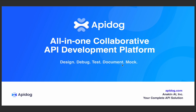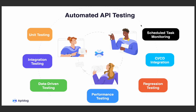Hello everyone and welcome to this API Dog tutorial. API Dog is an all-in-one collaborative API development platform covering every step of your API development process, starting with API design, debugging, testing, documentation, and mocking. In today's tutorial we will be focusing on automated API testing, which will be useful for QA engineers and API testing teams. We will be covering unit testing, integration testing, data-driven testing, performance testing, and regression testing.